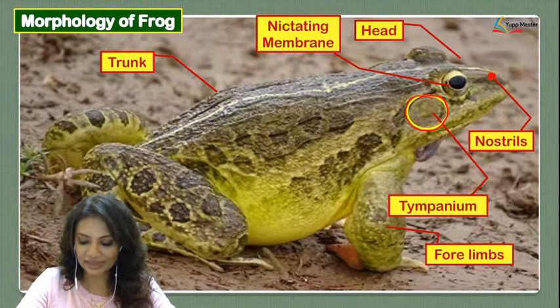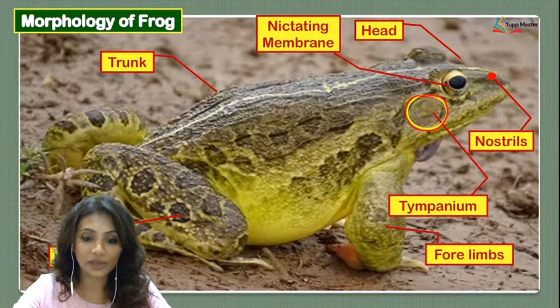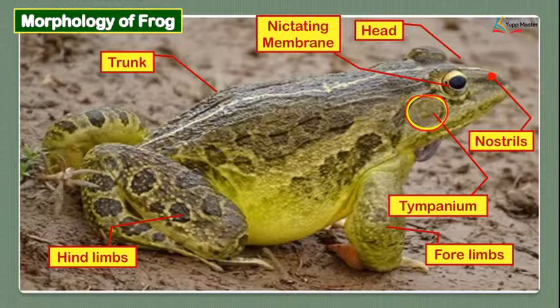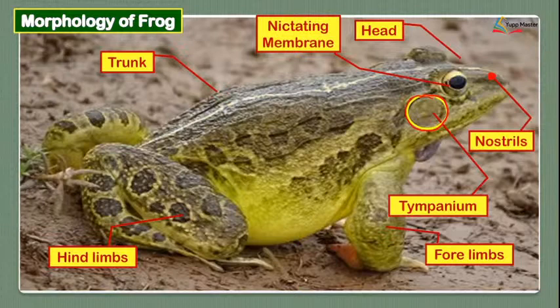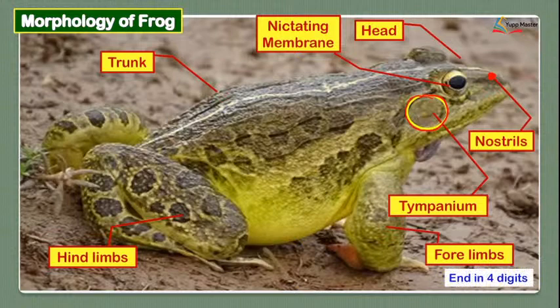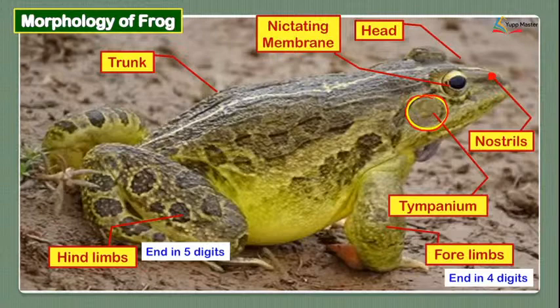The frog has four limbs as well as hind limbs, and both have digits. The forelimbs end in four digits, whereas the hind limbs have five digits — just like how we have five fingers. So four digits in the forelimbs and five digits in the hind limbs.